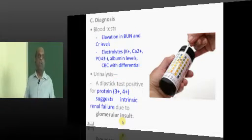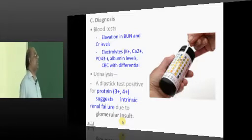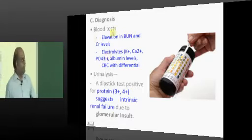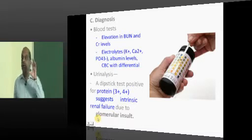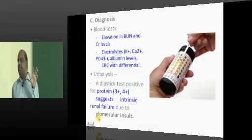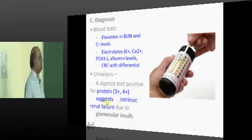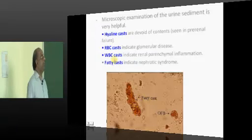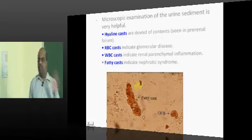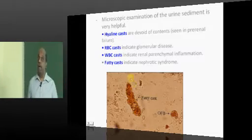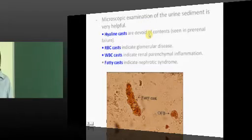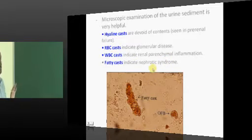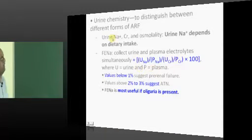In a case of ARF, important investigations include electrolytes — potassium, calcium, phosphate, albumin, CBP, etc. If there is proteinuria, it is an important clue of intrinsic renal pathology. Always get a urinary sediment — complete urinary examination, called the poor man's renal biopsy. If hyaline casts are present, it is a more benign pathology. RBC casts indicate glomerular disease. WBC casts mean parenchymal inflammation. Fatty casts indicate nephrotic syndrome. These are all important clues.